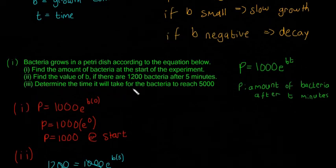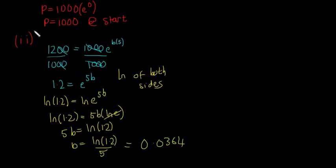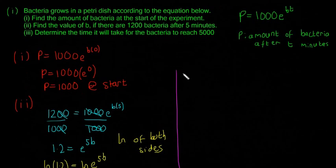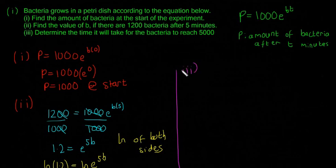So now the third question. Determine the time it will take for the bacteria to reach 5,000. So that's really similar to part 2 there. So part 3. Determine the time it will take for the bacteria to reach 5,000. So P is the amount of bacteria after 10 minutes. So we're going to say 5,000. So P is 5,000. It's going to be equal to 1,000 by E to 0.0364. So remember that's what B is by T. So this time we know that P is 5,000 and we want to find out what T is. So how long it takes for this to happen.